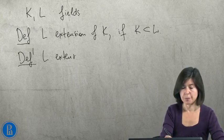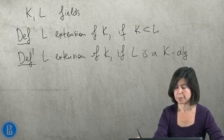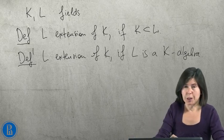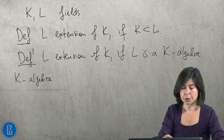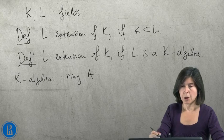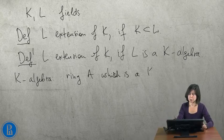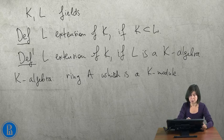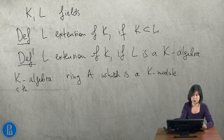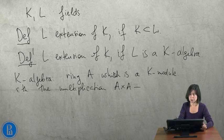An equivalent definition is as follows. L is an extension of K if L is a K-algebra. Let me remind you what is a K-algebra. A K-algebra is a ring with a structure of a K-module, such that these two structures are compatible, such that the multiplication, which goes from A times A to A, is bilinear, K bilinear of course.